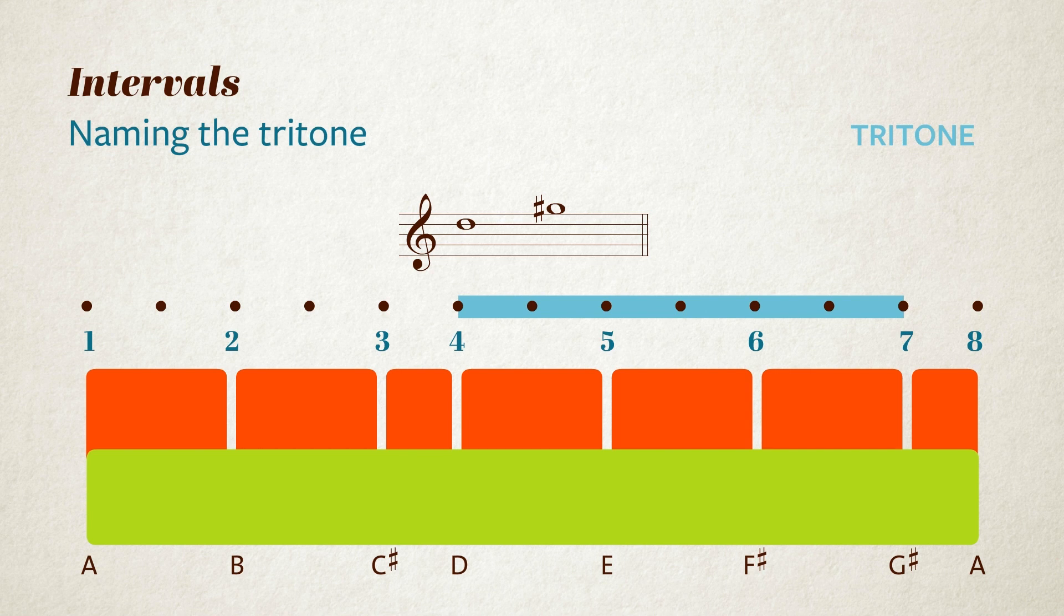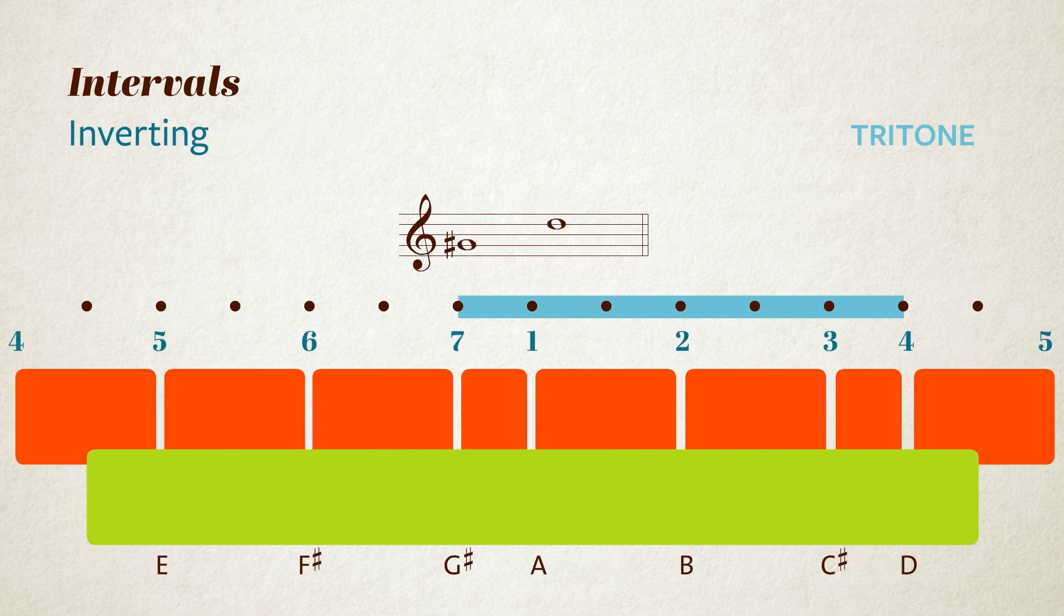Now let's invert this interval. That means moving one of the notes up or down an octave so that it leaps over the other one. Because this interval is half an octave high, the inversion will also be half an octave. But now we're going from G sharp to D. And because G to D is a perfect fifth, this time, the interval is going to be some kind of fifth. We say it's a diminished fifth. That's the name for a perfect interval that has been decreased by a semitone.